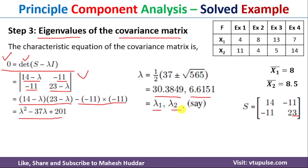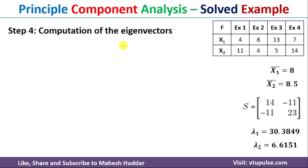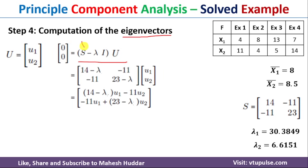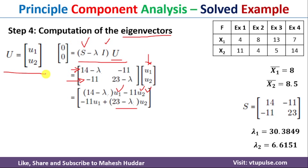In the fourth step, we calculate the eigenvectors. We name the eigenvector u = [u1, u2] and use the equation (S minus lambda*I) times u equals 0. Substituting gives two equations: (14-lambda)*u1 minus 11*u2 = 0, and minus 11*u1 plus (23-lambda)*u2 = 0. Taking the first equation, we get u1/11 = u2/(14-lambda) = t. Setting t=1, u1 = 11 and u2 = 14-lambda. So the eigenvector u = [11, 14-lambda].